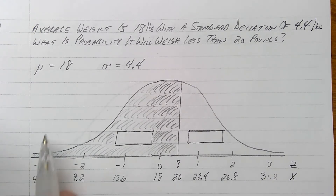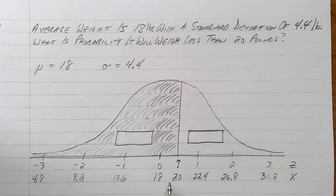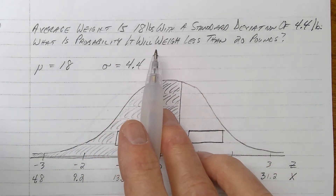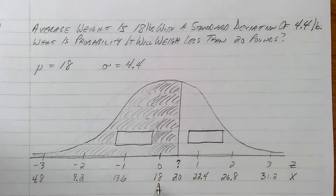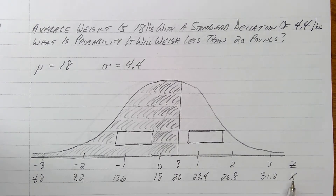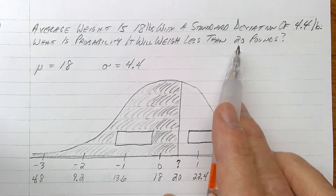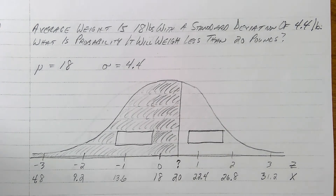4.8 pounds would be unusually light and 31.2 pounds would be unusually heavy for whatever this animal is, with the average right in the middle at 18. My question is: what's the probability I reach into a hat and pull out an animal that weighs less than 20 pounds? We'll figure out where 20 pounds lands here. Your Z numbers are your 0, 1, 2, 3 standard scores, and your raw score X comes from the story. 20 is going to be in between 18 and 22, so I place it right about there.